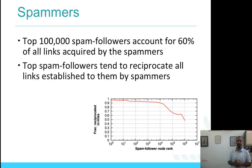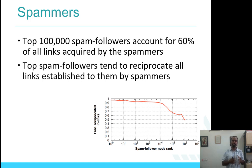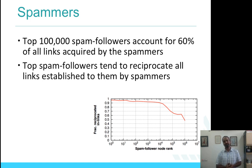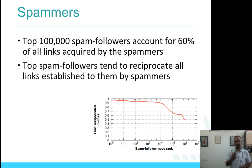The fraction reciprocated in-links is the probability of you following me when I actually follow you — reciprocity. If I follow you, what is the probability that you will follow me back — that is what is put on the y-axis. So fractional reciprocated in-links from spammers versus spam follower node ranks. The top 100,000 spam follower accounts account for 60 percent of all links acquired by the spammers. The x-axis is on a log scale: 1, 10, 100, 1000, 10,000, 100,000, and a million.